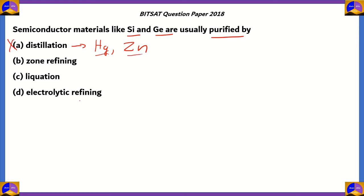Electrolytic refining uses electrolysis where the metal moves to the electrode forming a pure material. Metals such as copper, tin, and nickel are refined using electrolysis. Therefore option D is incorrect because these are not semiconductor materials.